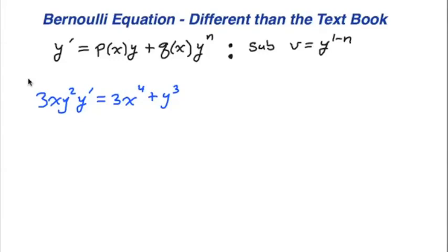This is an example of the Bernoulli equation, a different style than the textbook. The way this style works is we're going to set it up as y prime equals some function of x times y plus some function of x times y raised to some power. Then we're going to use this substitution to let v equal y raised to the 1 minus n, where this is n.